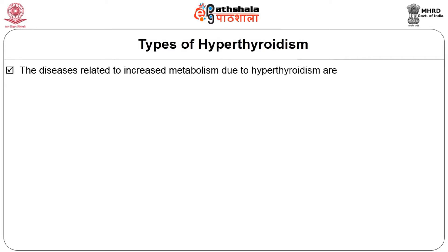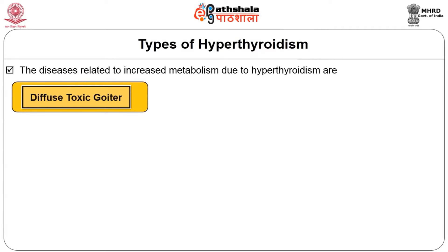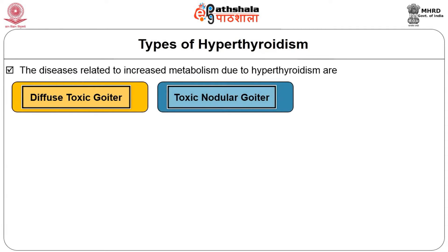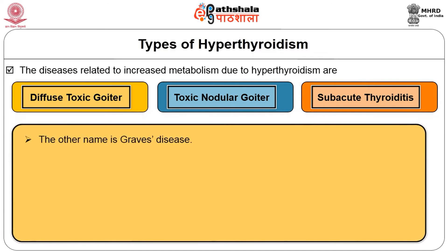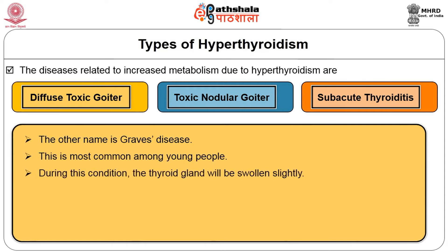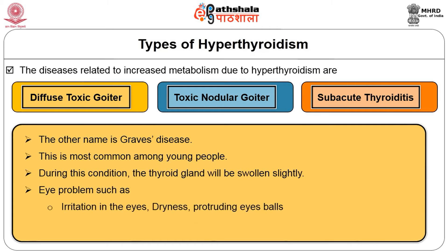The diseases related to increased metabolism due to hyperthyroidism are: diffuse toxic goiter, toxic nodular goiter, and subacute thyroiditis. Diffuse toxic goiter is also called Graves disease and is the most common among young people. During this condition, the thyroid gland will be slightly swollen, and eye problems such as irritation of the eye, dryness, protruding eyeballs, difficulty in closing the eyelids, and double vision are the most common symptoms.